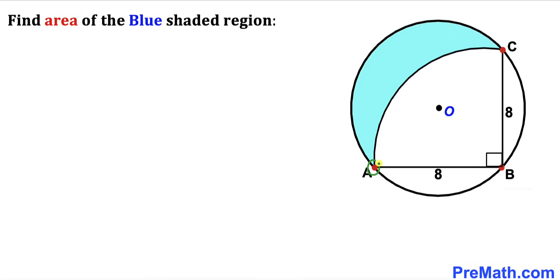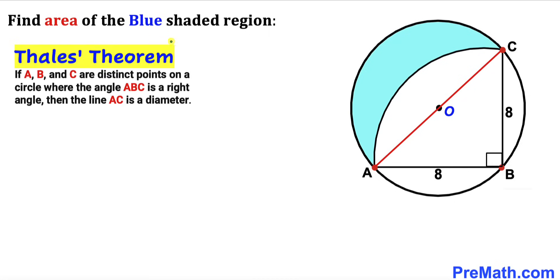Let's connect points A and C. Now let's recall the Thales theorem. According to this theorem, if A, B, and C are distinct points on the circle and angle ABC is 90 degrees, then line AC is going to be our diameter.